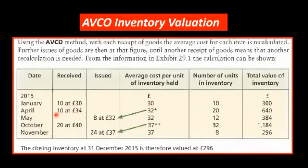In April, we buy another 10 at 34. That's 340. And this 300 here gives us a total of 640. So we have 20 units. We divide 640 by 20 and we get $32 per unit.